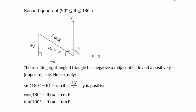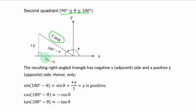Next is the second quadrant, where the value of the acute angle is between 90 degrees and 180 degrees. The hypotenuse is always of unit 1. This is the structure of the second quadrant. In the second quadrant the y-axis is positive and the x-axis is negative.